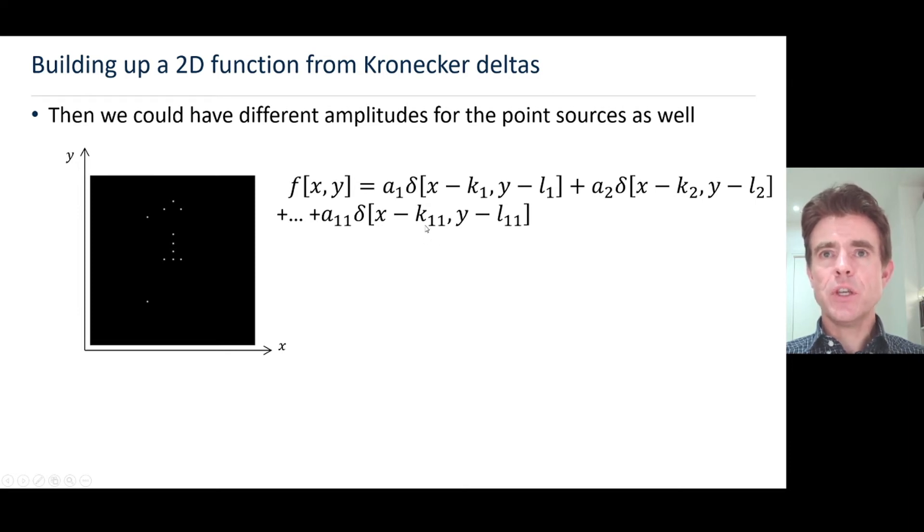There's the indication of the amplitudes. Now I've deliberately highlighted three example point sources here, where this would be like a high value of a, that would be a lower value of a, and that would be a lower value again. Just made the pixels larger there to show that we can control their intensity in this mathematical description.